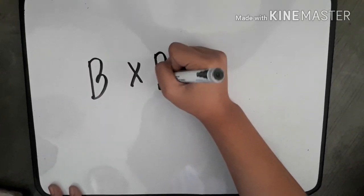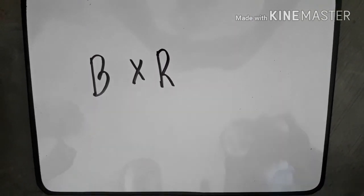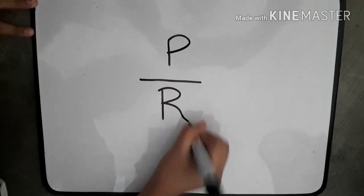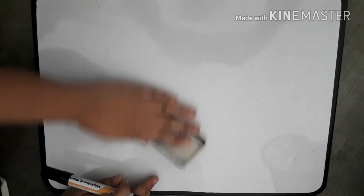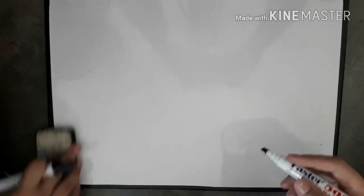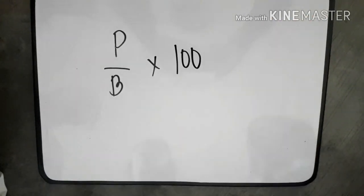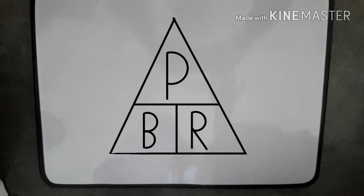The percentage formula is base multiplied by rate. The base formula is percentage divided by rate. And lastly, rate formula is percentage divided by base, then multiply by 100. For you to remember the formula easily, just remember the triangle formation: percentage on top and base and rate on the bottom of percentage.